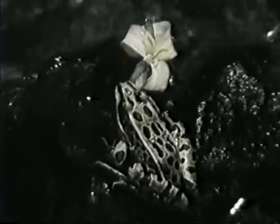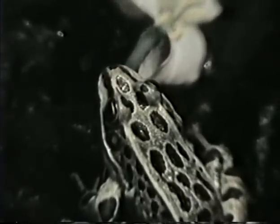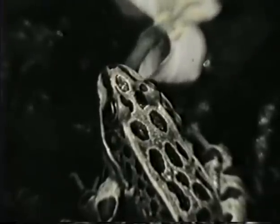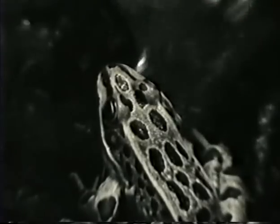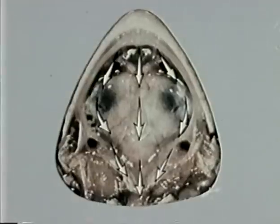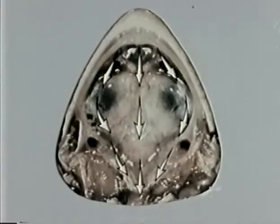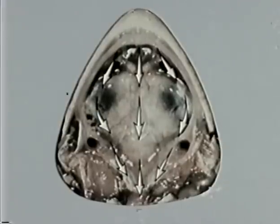Frogs have a mucociliary apparatus in their mouth to carry food particles such as cricket legs off to their stomach. This system is often used as a model for studying mucociliary function. This is a frog pallet preparation. The arrows indicate the direction of mucus flow. We will now show you the effect of formaldehyde on the frog pallet mucociliary apparatus.